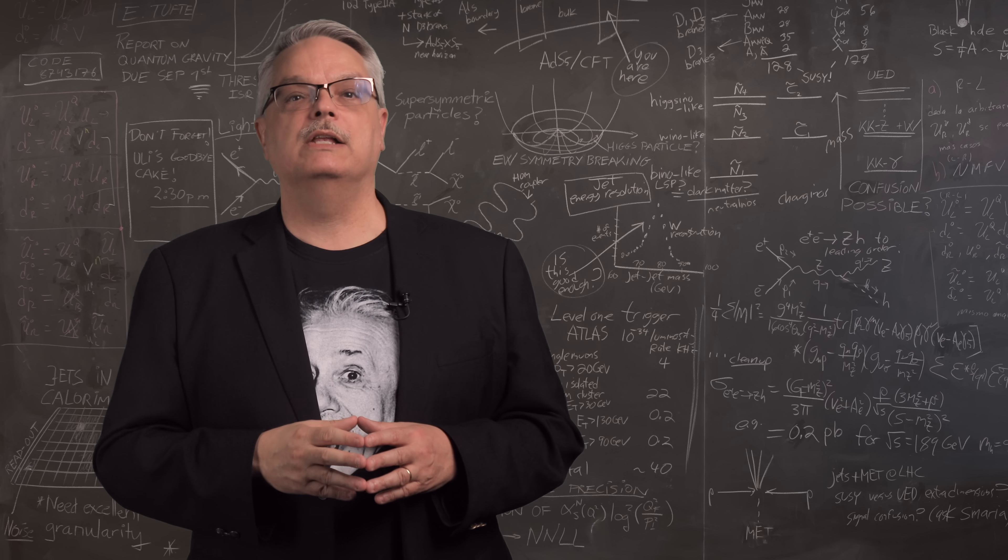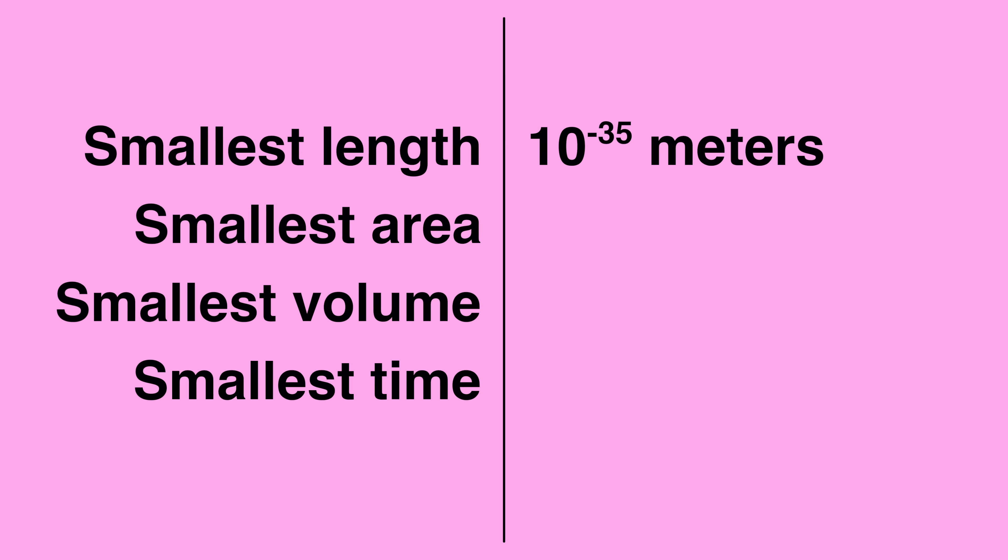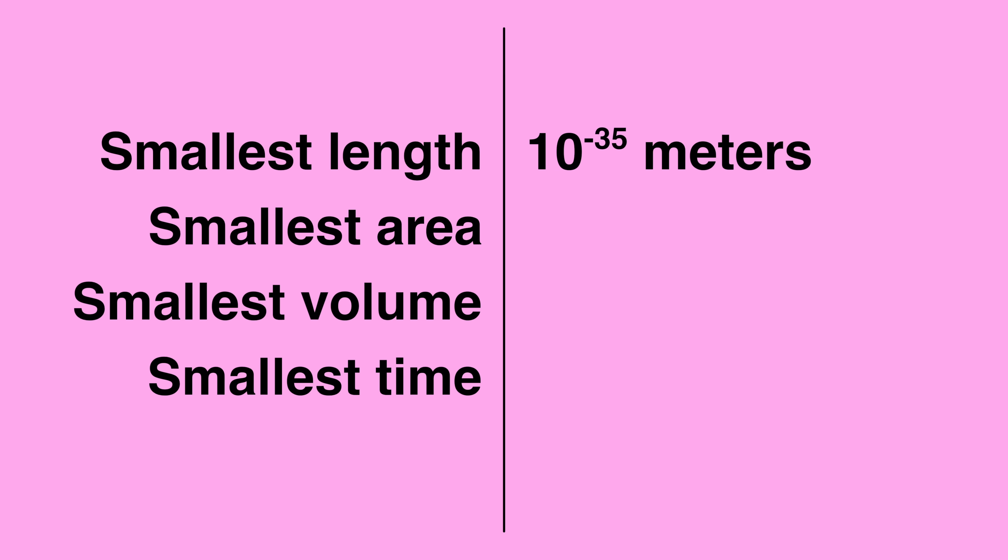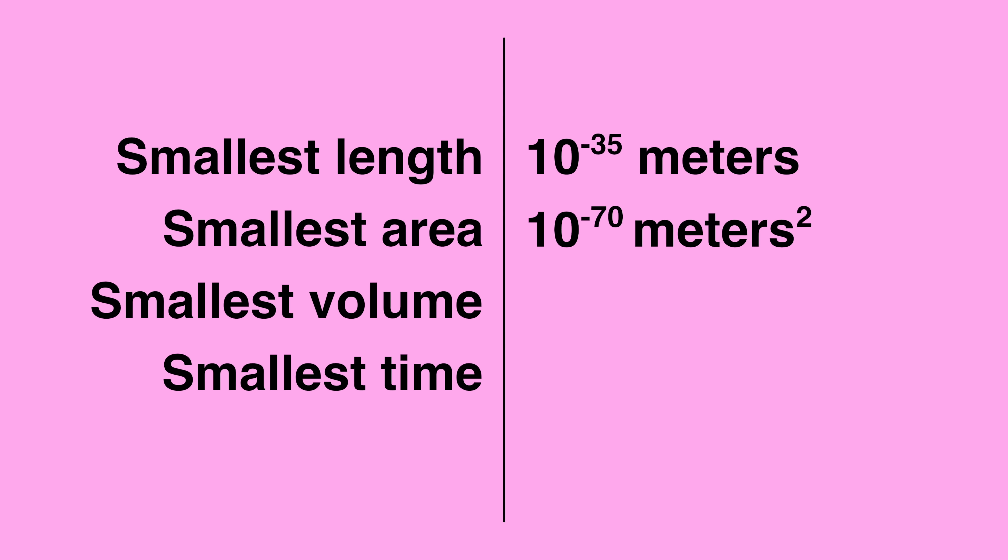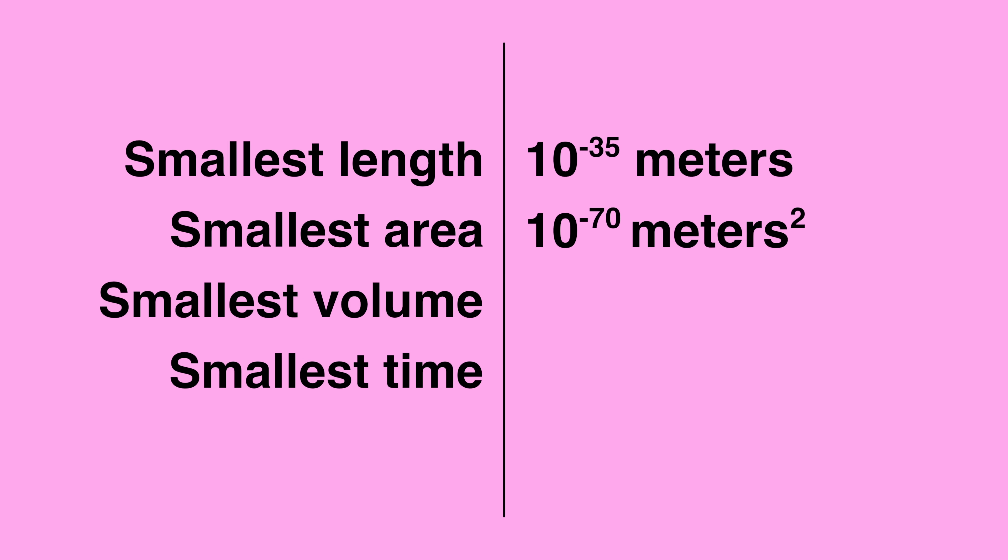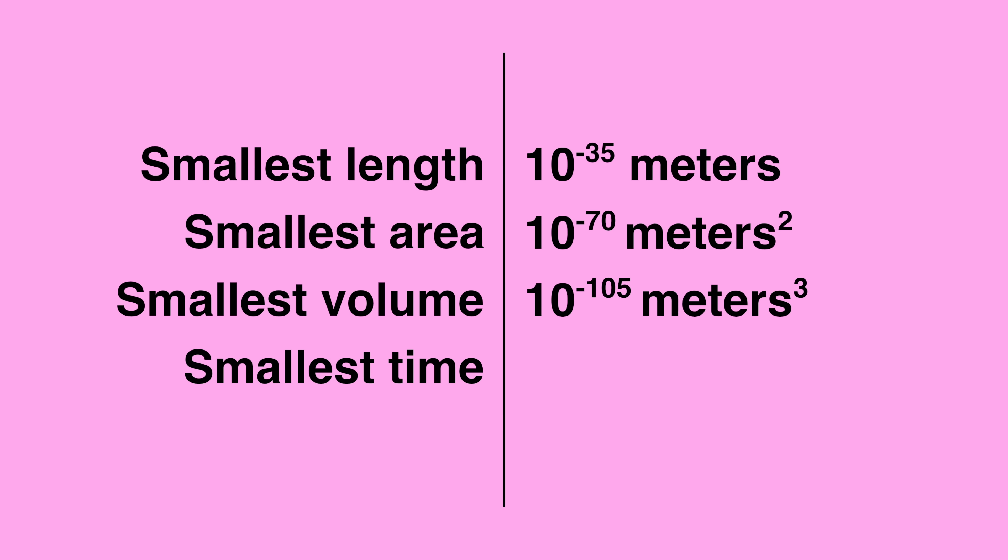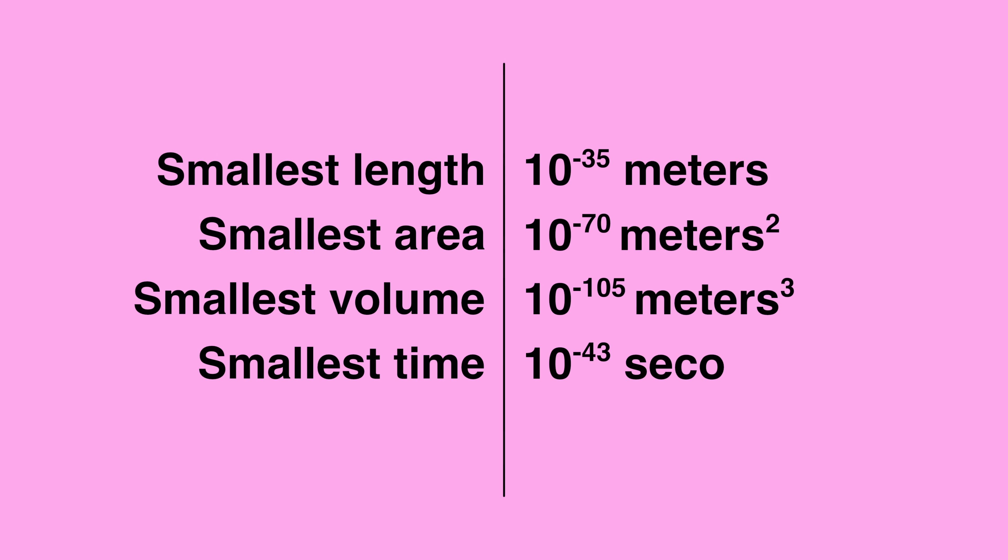One of the core consequences of that conclusion is that loop quantum gravity implies that there is a smallest length, which is 10 to the minus 35 meters, a smallest area, which is 10 to the minus 70 square meters, and a smallest volume, which is 10 to the minus 105 cubic meters. Further, there's a smallest time, which is 10 to the minus 43 seconds.